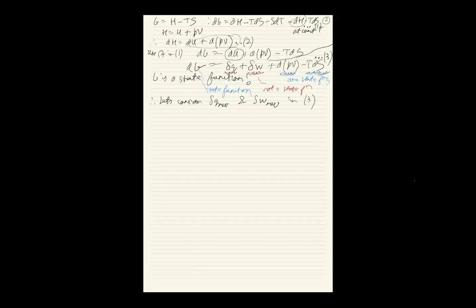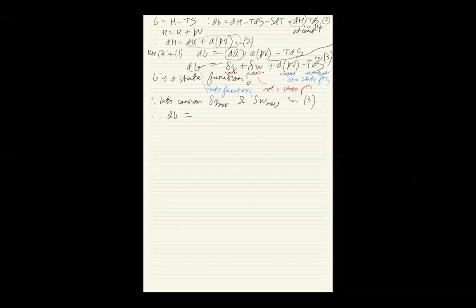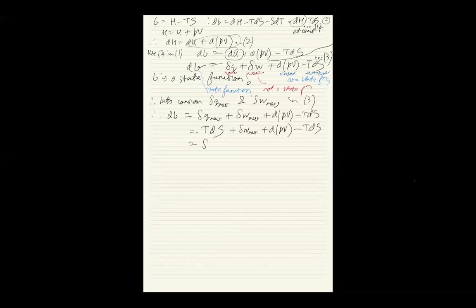Therefore dG = δq_reversible + δw_reversible + d(PV) - TdS. Now δq_reversible = TdS — there is no inequality here. So TdS cancels, and we are left with δw_reversible + d(PV).